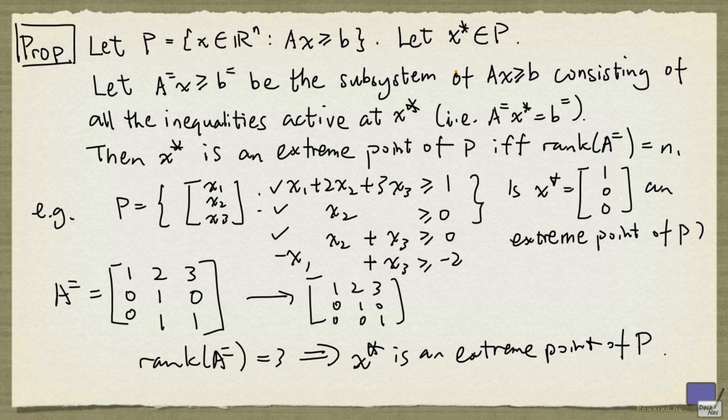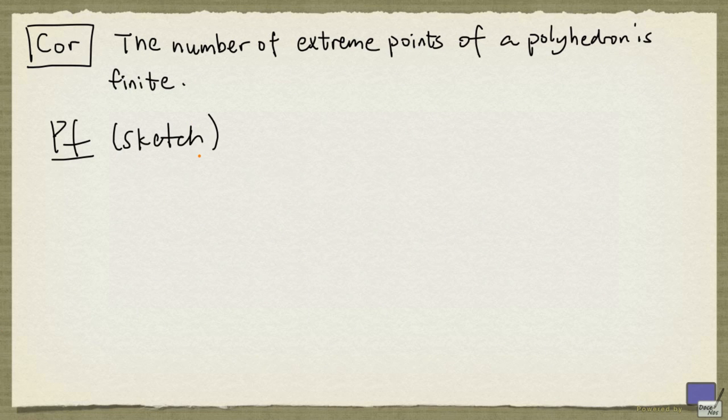Now one consequence of this proposition is that we can show there are only finitely many extreme points in a polyhedron. Let's look at a sketch of the proof of this. Say P is a polyhedron given as before.